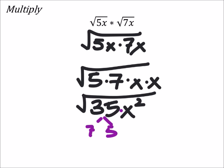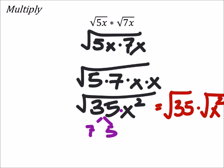So in other words, I'm going to break this apart so that I have the square root of 35 times the square root of x squared. Well, at this point, the square root of x squared is just x now.